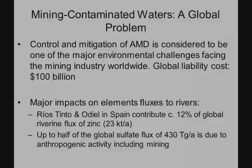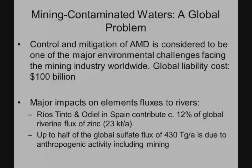Mining contamination is a big global problem. Acid mine drainage is hugely expensive for mining industries and also for governments, because many mines have been abandoned — historic mines where companies have gone bankrupt and governments have to take responsibility. From a scientific point of view, this mine waste weathering impacts our global cycles. We can construct cycles for sulfur, iron, any element from the periodic table, and the fact that we're putting so much mine waste into the environment means we're adding zinc, sulfate, and other elements to our rivers, putting an imprint on the natural cycles.